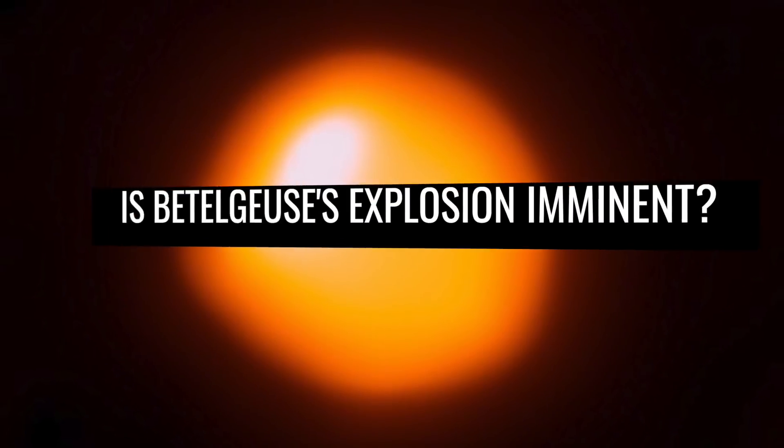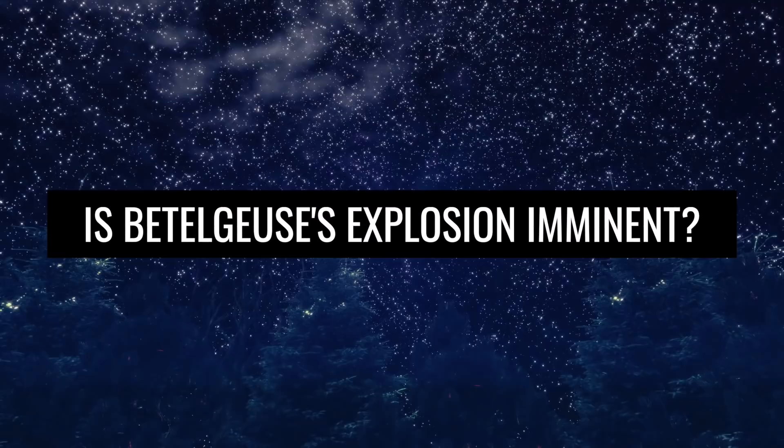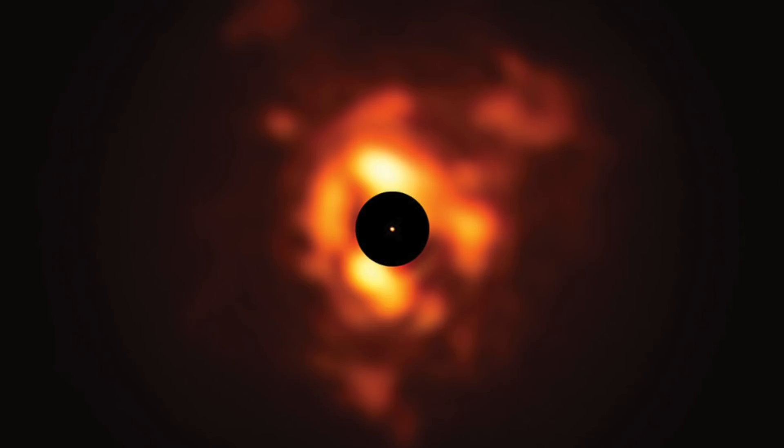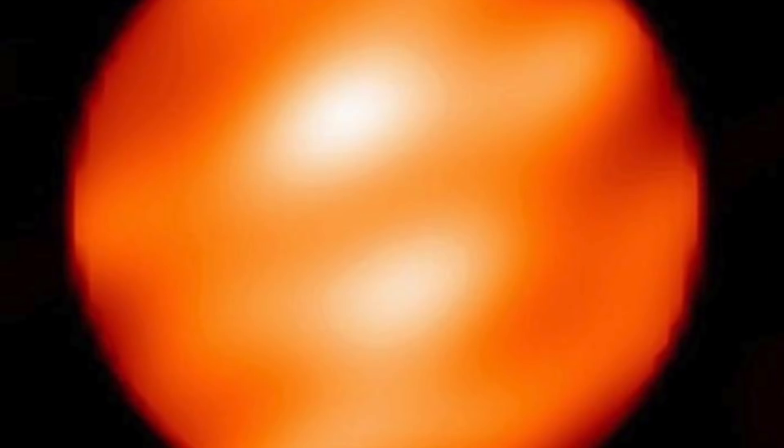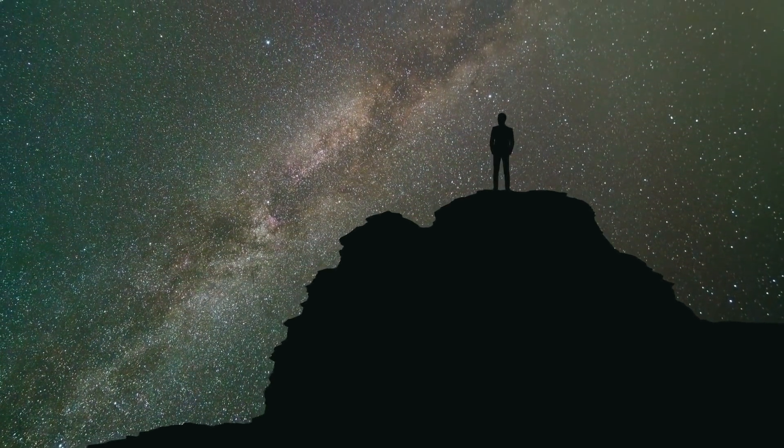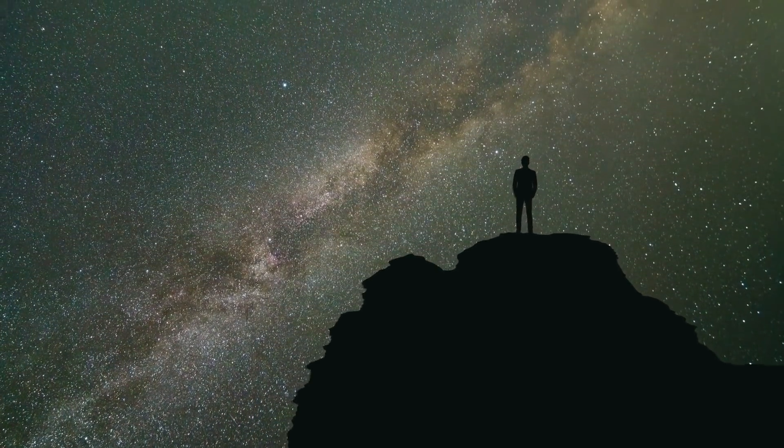Is Betelgeuse's explosion imminent? In 2019, something strange happened in the night sky. Betelgeuse darkened. The red giant suddenly lost about 40% of its luminosity. In observatories around the world, astronomers held their breath. They suspected that the giant was about to explode.